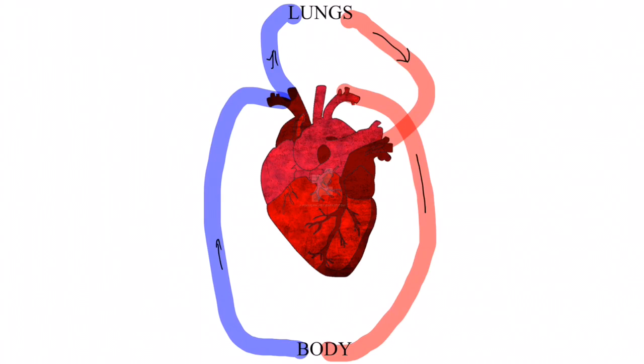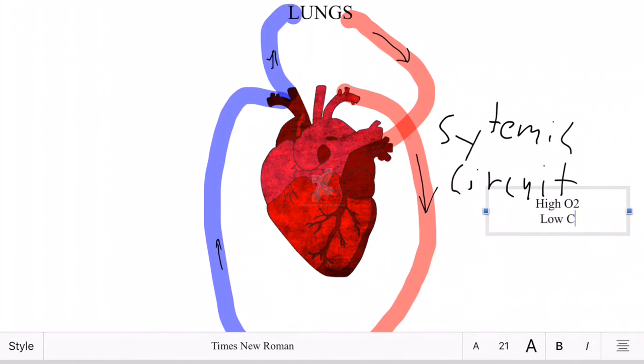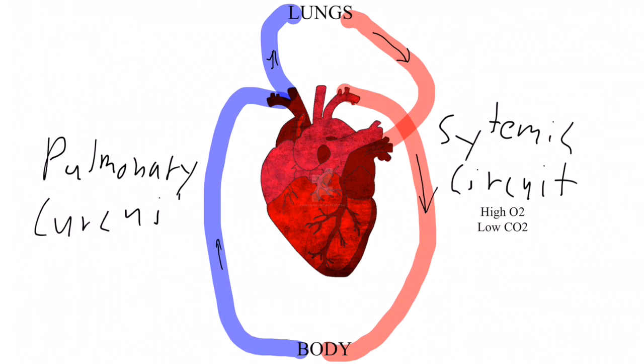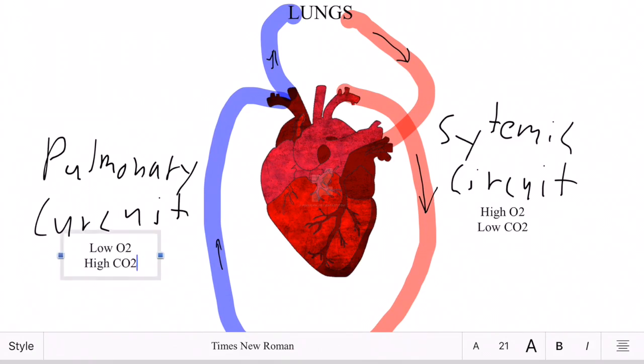One loop is oxygenated, the other is deoxygenated. These loops are important because they make sure your tissue and muscle blood is full of oxygen. It also makes sure the blood passes through the heart twice.